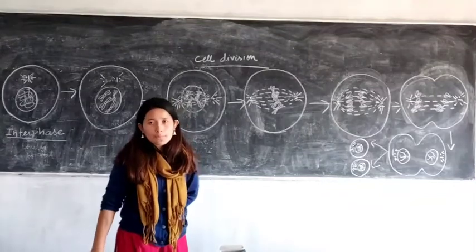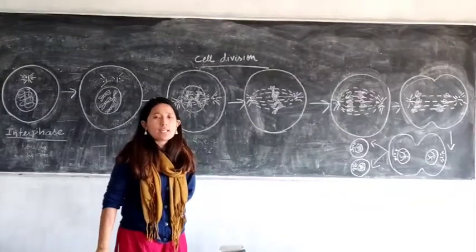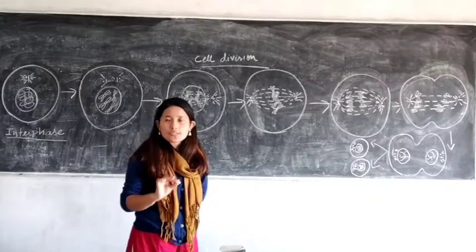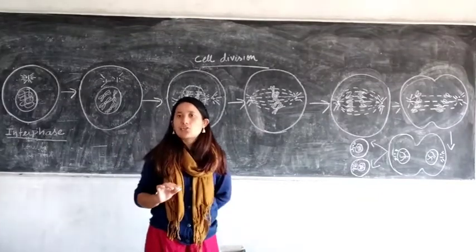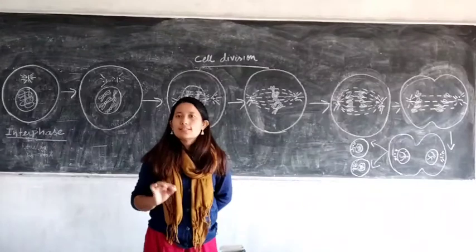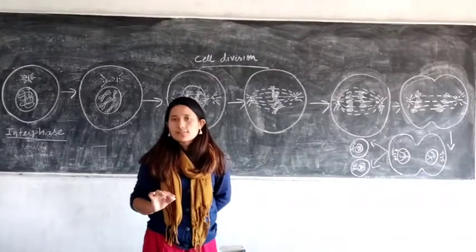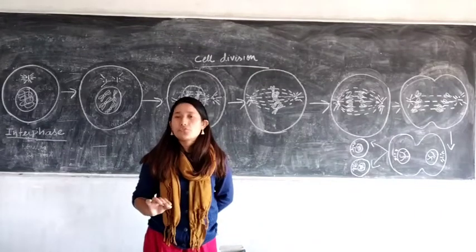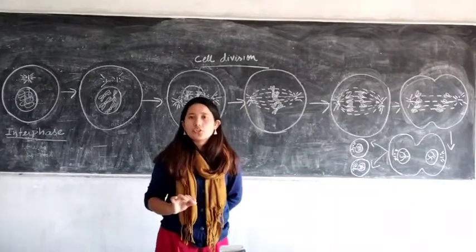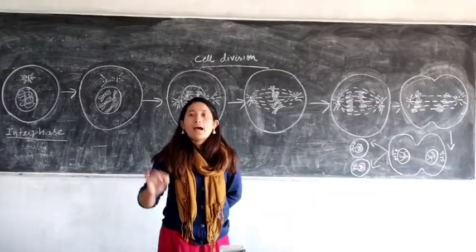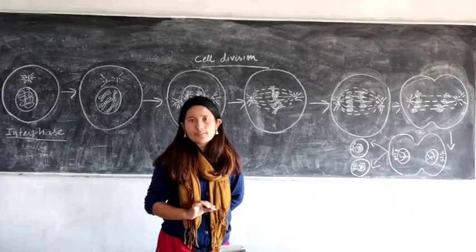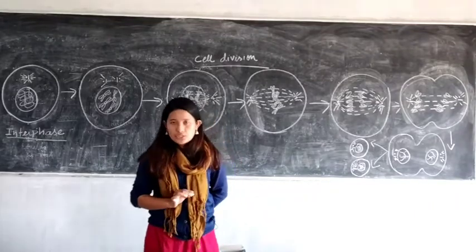After interphase is complete and the cell moves on with cell division, cell division has two stages: karyokinesis and cytokinesis. Karyokinesis means division of the nucleus, and cytokinesis means division of the cell. In mitosis, karyokinesis is divided into different stages.